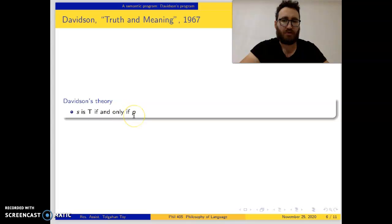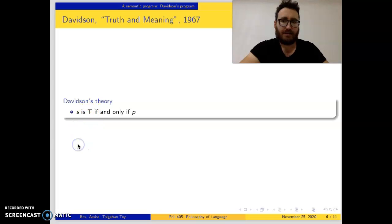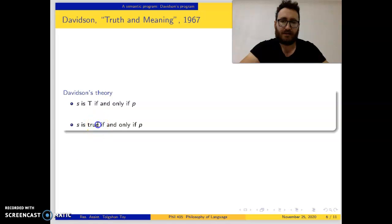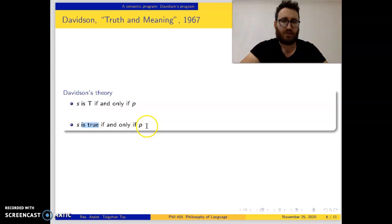In this way, he links the structural description of the sentence to its meaning: S is T if and only if P. Or: 'snow is white' is T if and only if P. The best candidate for T, for Davidson, is the predicate 'is true'. So: 'snow is white' is true if and only if snow is white.